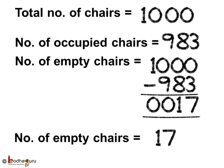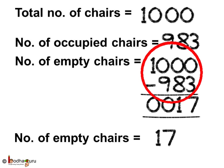Let us see again how we solved this problem. Total number of chairs in the stadium is equal to 1000. Number of occupied chairs is equal to 983. So the number of empty chairs is 1000 minus 983, which is equal to 17. Thus the total number of empty chairs is equal to 17.